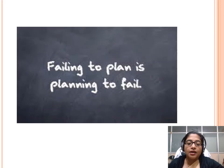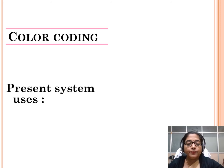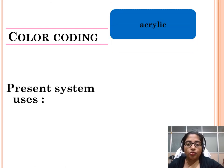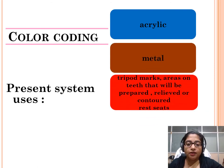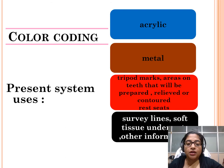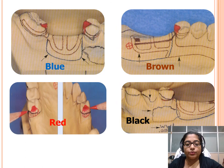As the saying goes, failing to plan is planning to fail, so it is very important to plan meticulously. The color coding used in partial denture design is as follows: blue for acrylic, brown for metal, red for tripod marks and areas on teeth that will be prepared, relieved, or contoured — including rest seats and survey lines — and black for other soft tissue undercuts and additional information. You can see blue, brown, red, and black colors are used in the design drawing shown.